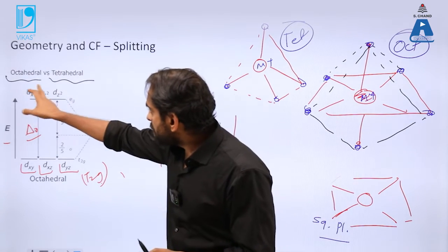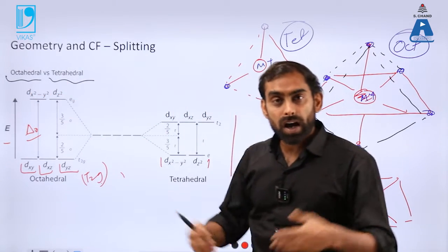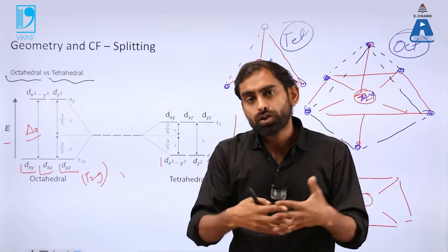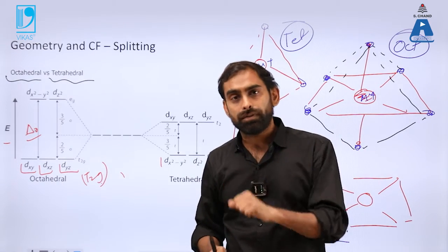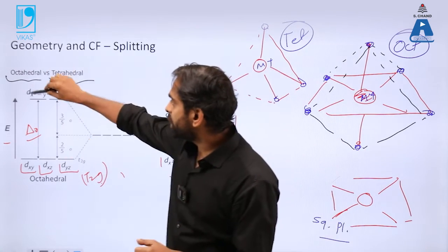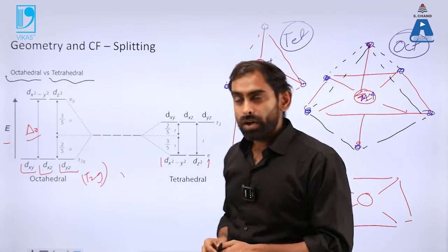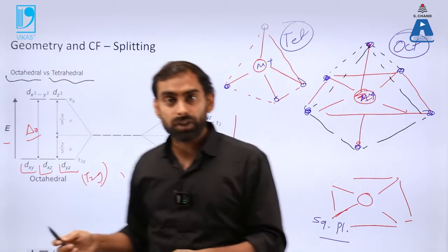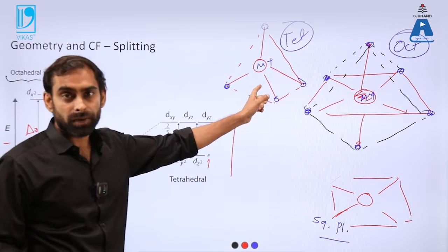So you can say in case of octahedral complexes, when such complexes are formed, x square minus y square and z square are making a close contact with the orbitals of ligand, so they are being extended to higher energy state.